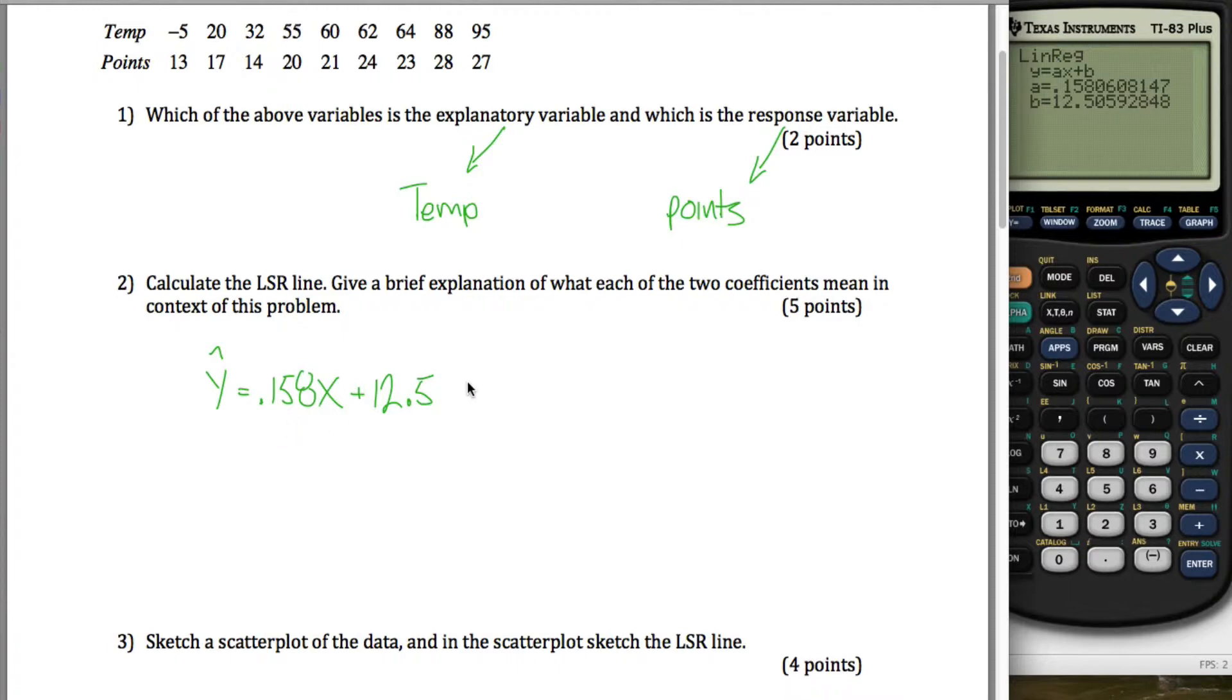This 12.5 is the y-intercept. Basically, the y-intercept tells you the predicted y value if x equals 0. X is the temperature. So this is just saying that if it were 0 degrees at kickoff, I'd expect the 49ers to score 12.5 points.